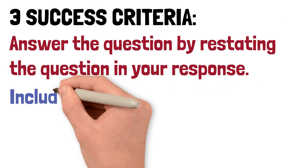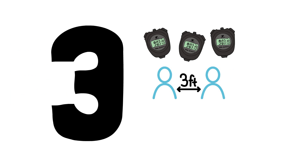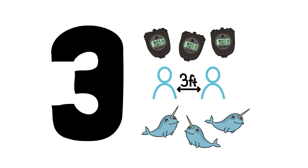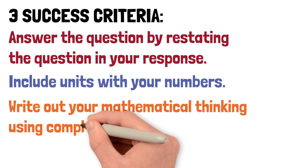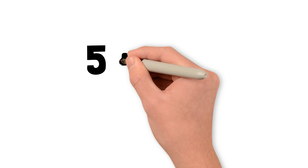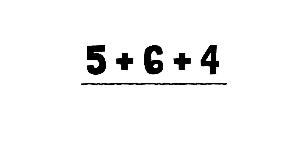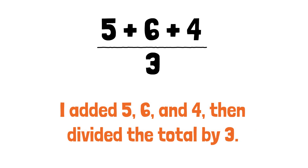Second, make sure you include units with your numbers. For example, rather than just writing three, make sure to write three minutes, or three feet, or three narwhals. And finally, write out your mathematical thinking using complete sentences to explain how you arrived at your answer. For example, if you added numbers together and then divided that total, be sure to describe that process using a complete sentence.